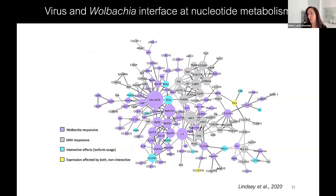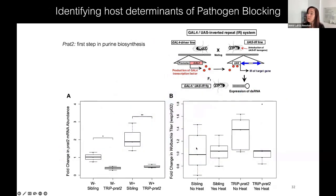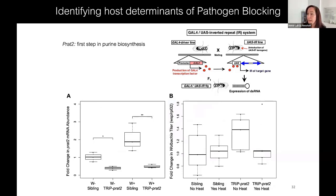At the interface of these two networks we find genes involved in nucleotide metabolism, such as ADE3, rudimentary-like, and PRAT2. Amelia went on to test whether these loci were important for Wolbachia-virus interaction using the UAS-GAL4 system of flies and RNAi resources that allow knockdown of genes endogenously. In this system, a heat shock driver produces a GAL4 transcription factor that binds the UAS of a construct producing double-stranded RNA targeting the PRAT2 gene, allowing us to test whether PRAT2 knockdown has an effect on Wolbachia-mediated pathogen blocking.